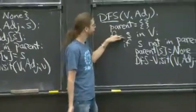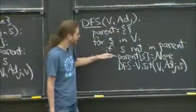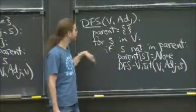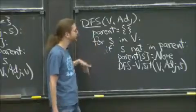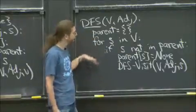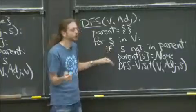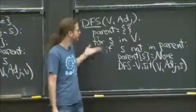So it's like, okay, let's try the first vertex. If that hasn't been visited, which initially nothing's been visited, then visit it recursively, everything reachable from s. Then you go on to the second vertex. Now you may have already visited it, then you skip it. Third vertex, maybe you've visited it already. Fourth vertex, keep going, until you find some vertex you haven't visited at all. And then you recursively visit everything reachable from it. And you repeat.